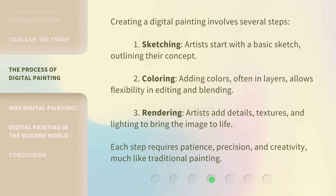Creating a digital painting involves several steps. First, sketching — artists start with a basic sketch, outlining their concept. Second, coloring — adding colors, often in layers, allows flexibility in editing and blending. Third, rendering — artists add details, textures, and lighting to bring the image to life. Each step requires patience, precision, and creativity, much like traditional painting.